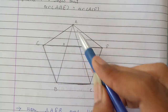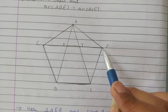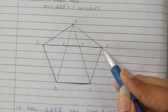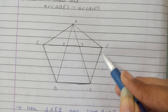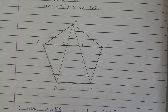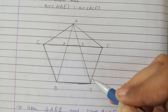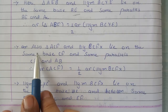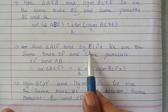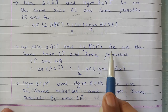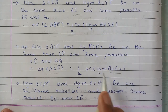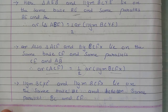Similarly, triangle ACF aur parallelogram BCFX consider karte hain. Donon ka base jo hai wo same hai CF, aur donon CF aur AB parallel lines ke beech mein hain. That means area of triangle ACF is half of area of parallelogram BCFX. So that's what we have written here — triangle ACF and parallelogram BCFX, donon same base CF ke upar hain aur CF aur AB parallel ke beech mein hain, isliye area(ACF) = ½ × area(BCFX). Got the fact.